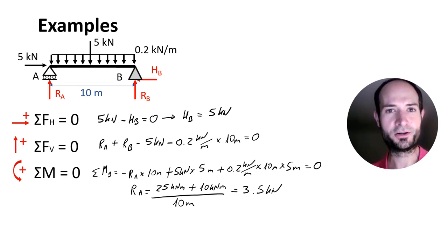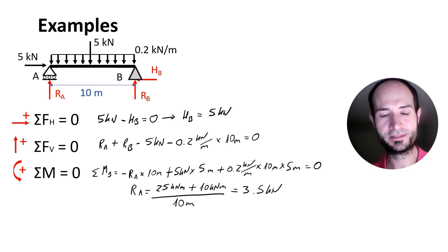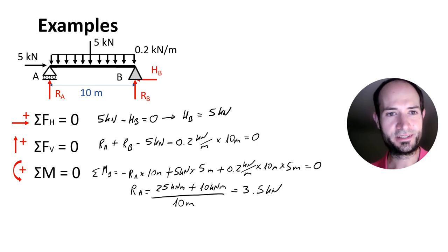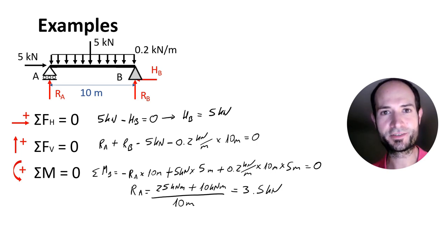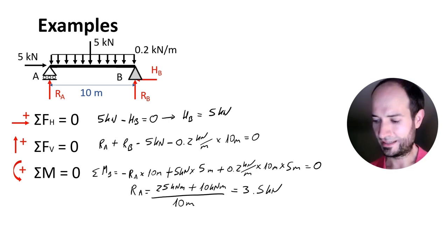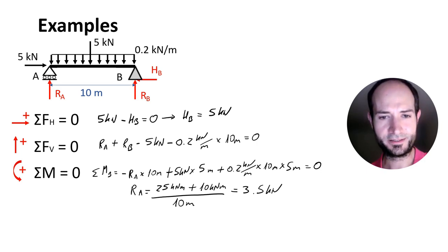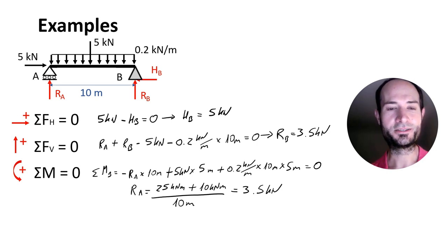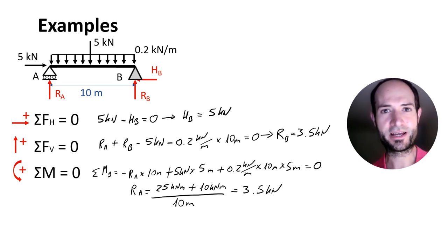Let's check it — because we know that half of the vertical load will go to support A and the other half to support B. The total load on the bridge is 5 kN plus 0.2 times 10, a total of 7 kN, divided by 2 is 3.5 kN. From the vertical equation, Ra plus Rb equals 7 kN, so as expected, Rb will also be 3.5 kN. That one is solved — we have calculated the reactions on a bridge.